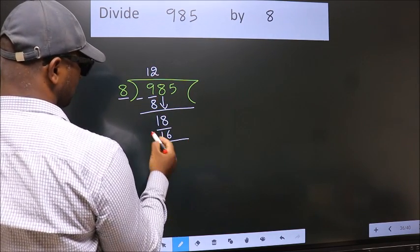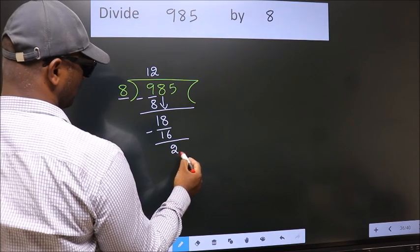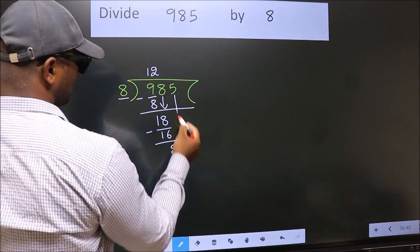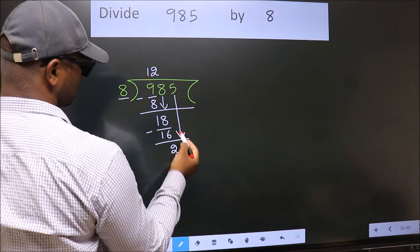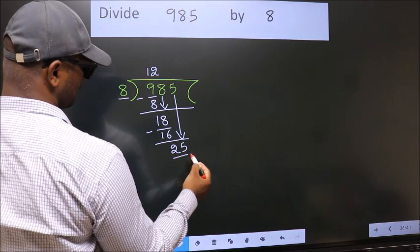Now, we subtract. We get 2. After this, bring down the beside number. So, 5 down.